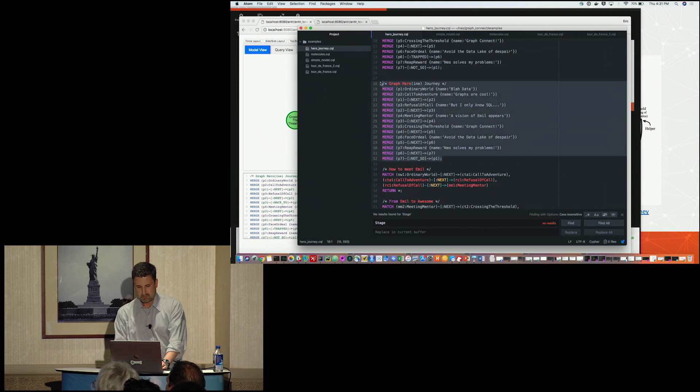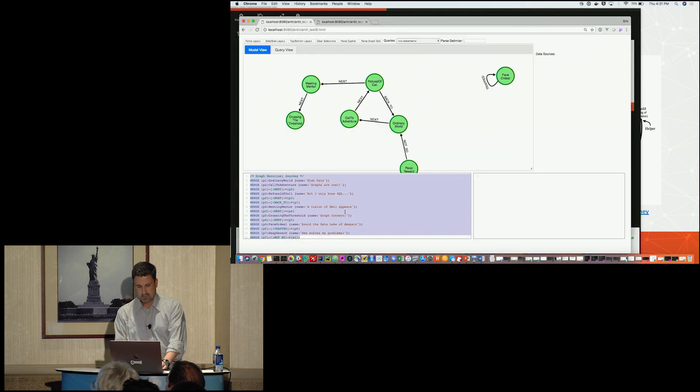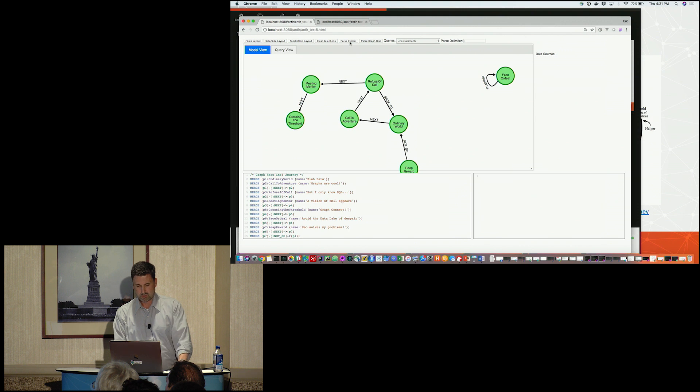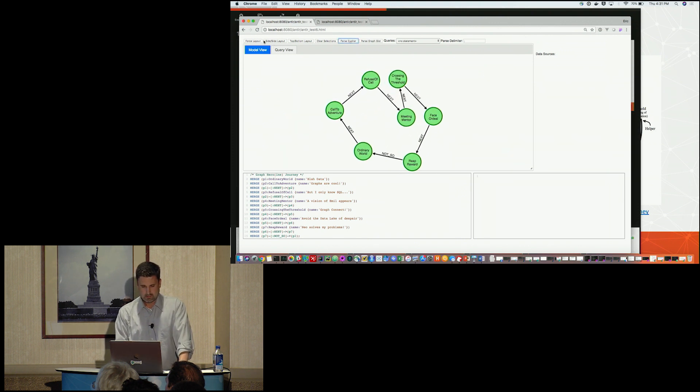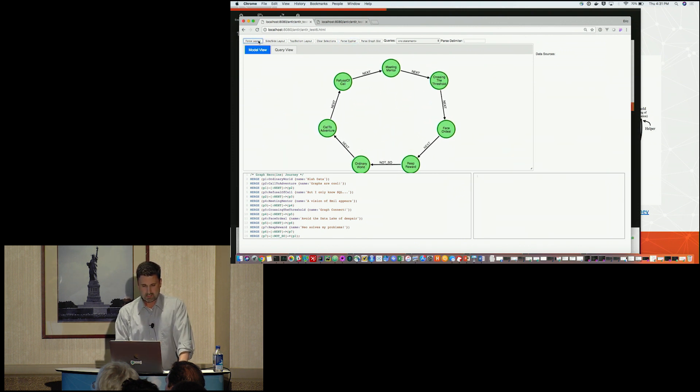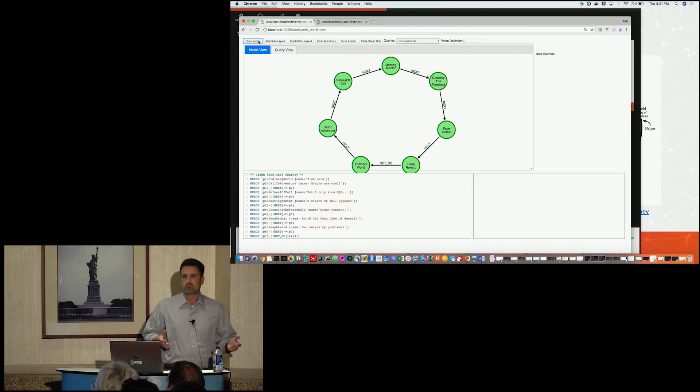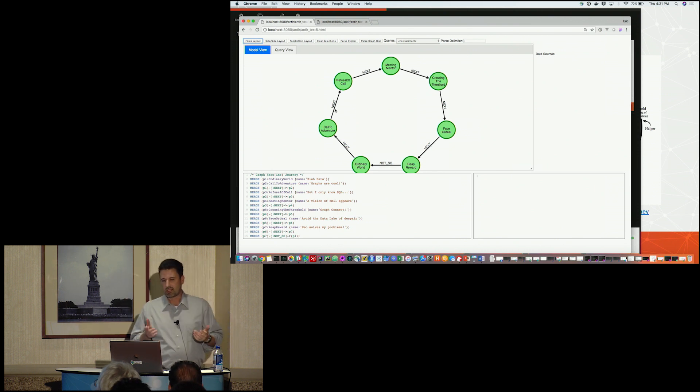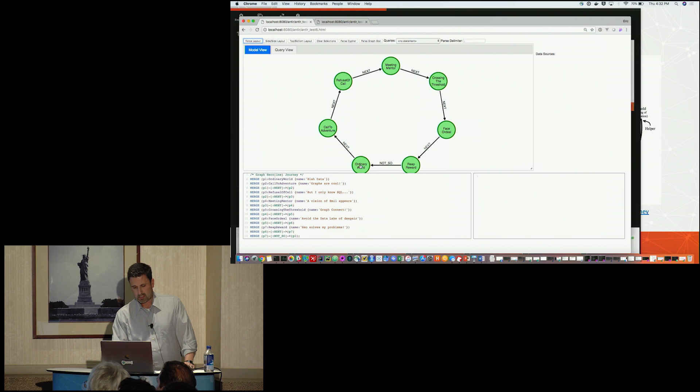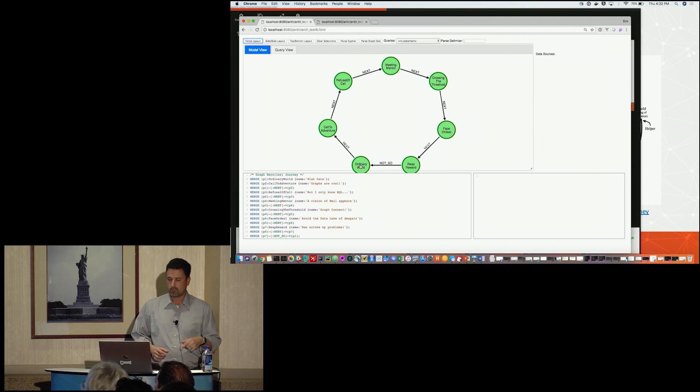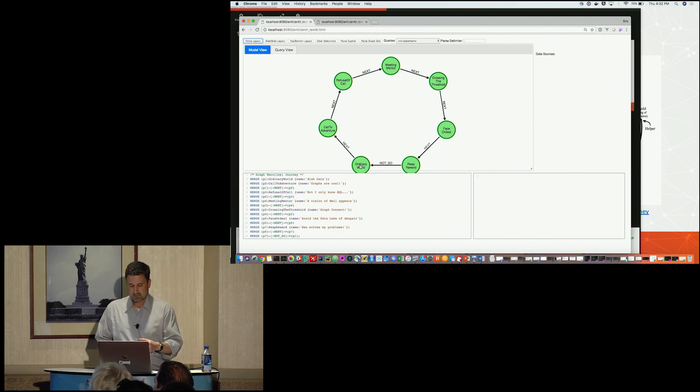So in order to fix that, you could modify the cipher. But I've already got the correct version here. So I'll parse it. And let me do a little more layout. And now it looks much like a circle, the hero's journey, as it should. And you can see as I reap my reward, I return to my not-so-ordinary world at the bottom.